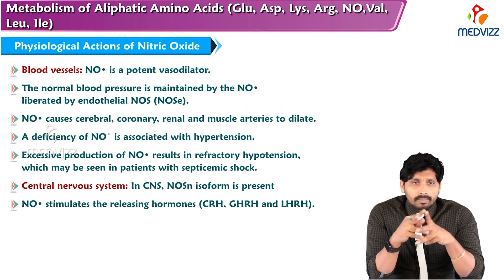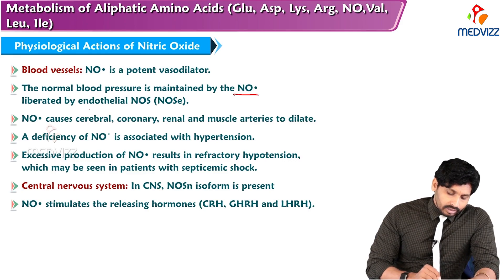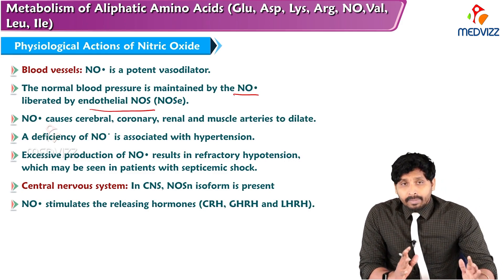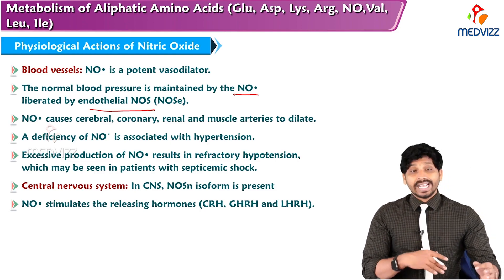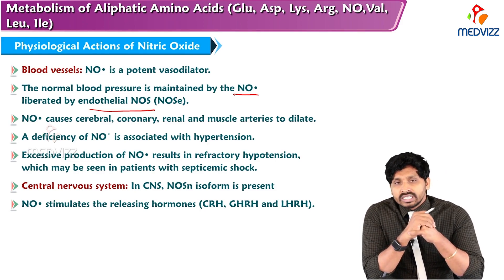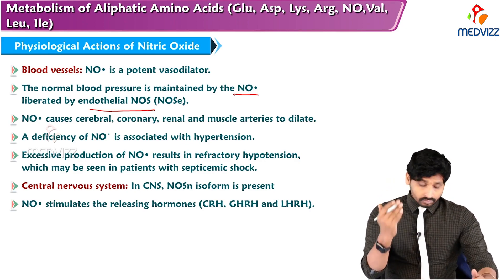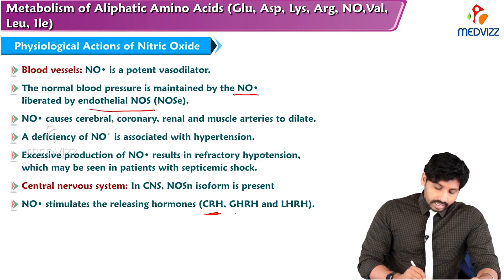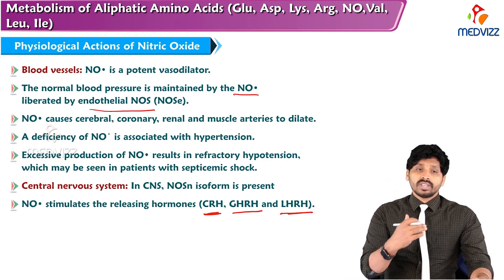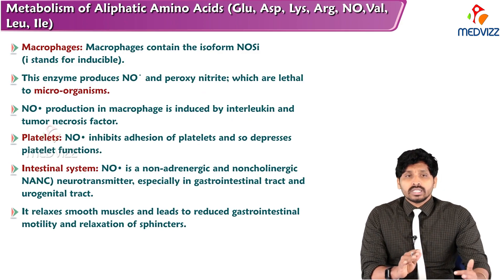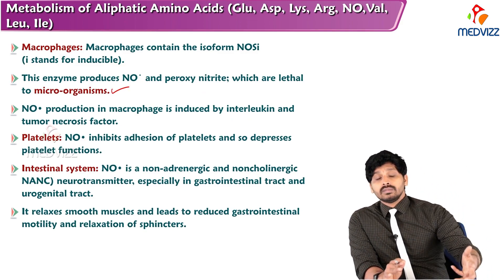Physiological actions of nitric oxide: on blood vessels, it is a potent vasodilator. Normal blood pressure is maintained by nitric oxide liberated by endothelial NOS. NO causes cerebral, coronary, renal, and muscle arteries to dilate. Deficiency of nitric oxide is associated with hypertension, while excessive production results in refractory hypotension, as seen in patients with septic shock. In the central nervous system, nitric oxide stimulates release of hormones such as growth hormone releasing hormone and luteinizing hormone releasing hormone. Macrophages contain the inducible isoform NOS2; the enzyme produces nitric oxide and peroxynitrite, which are lethal to microorganisms, providing a defense mechanism. Nitric oxide production in macrophages is induced by interleukins and tumor necrosis factor.